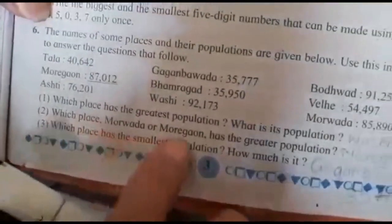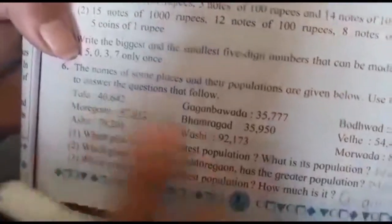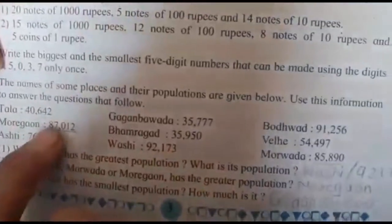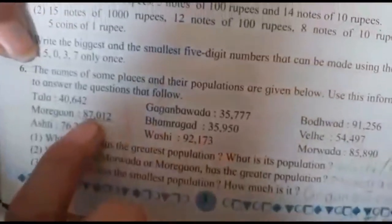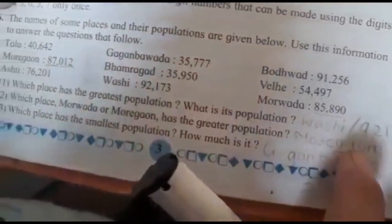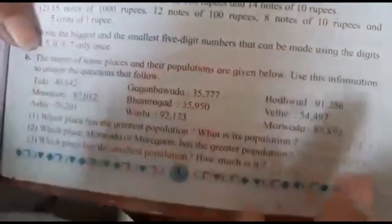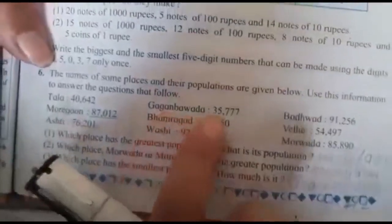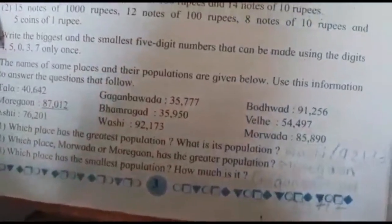Second question: which place, Morwara or Moregaon has the greatest population? We have to compare these two places. Moregaon is 87,012, Morwara is 85,890. So which is the greatest number? 87,000. So we will write Moregaon has the greatest population. Third question: which place has the smallest population, how much is it? Out of all these nine places, Gaganbawada is the place with 35,777 population. So we will write Gaganbawada, 35,777.